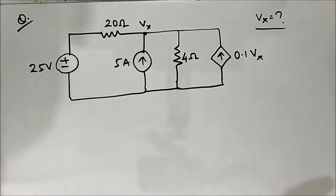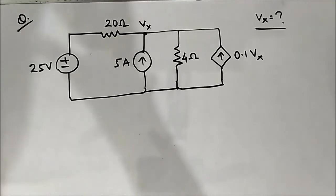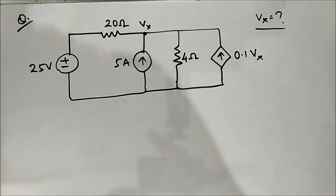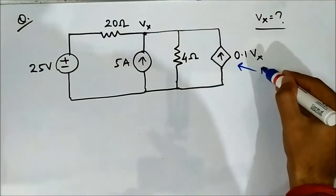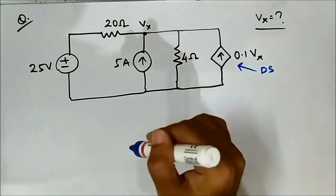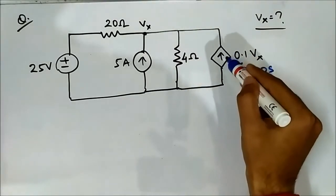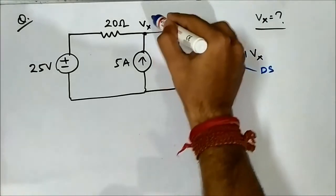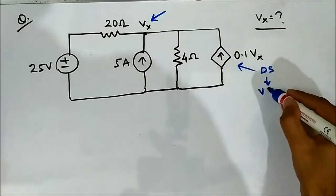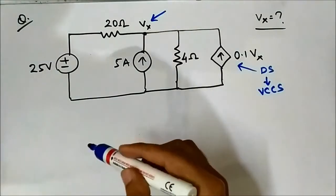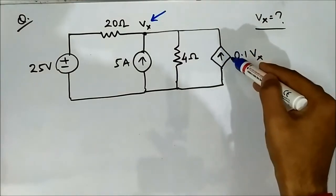We will solve a question on superposition theorem involving dependent sources. Here are the various elements involved. This is a dependent source — a current source whose value is dependent on voltage Vx, so it is a voltage controlled current source.